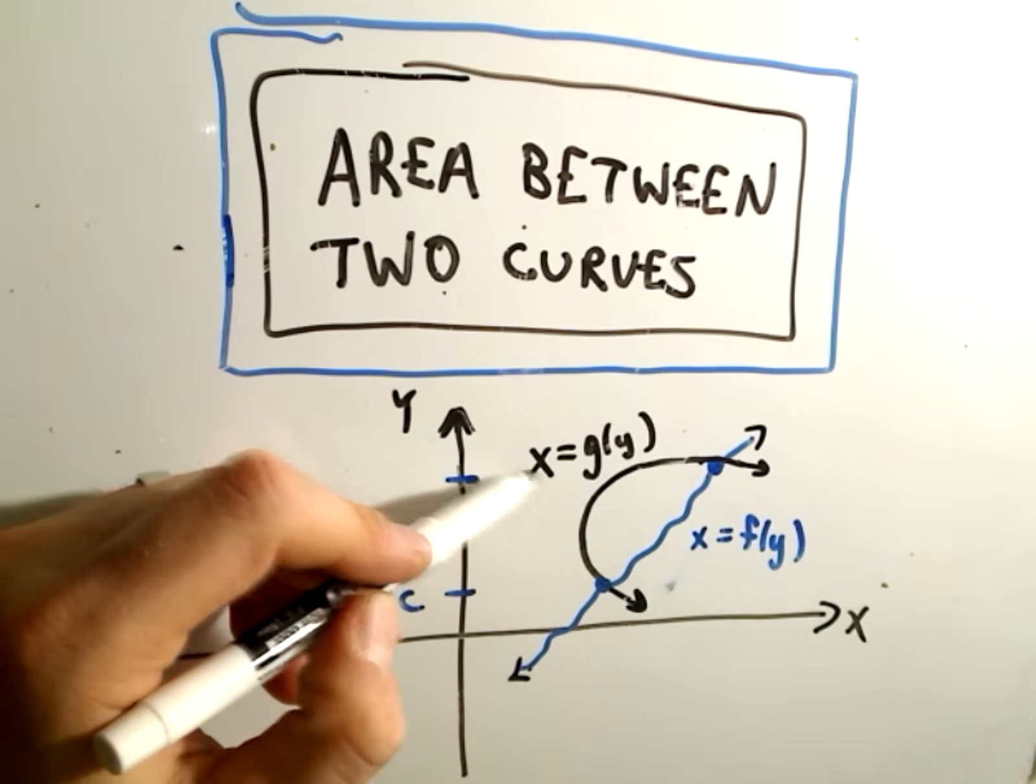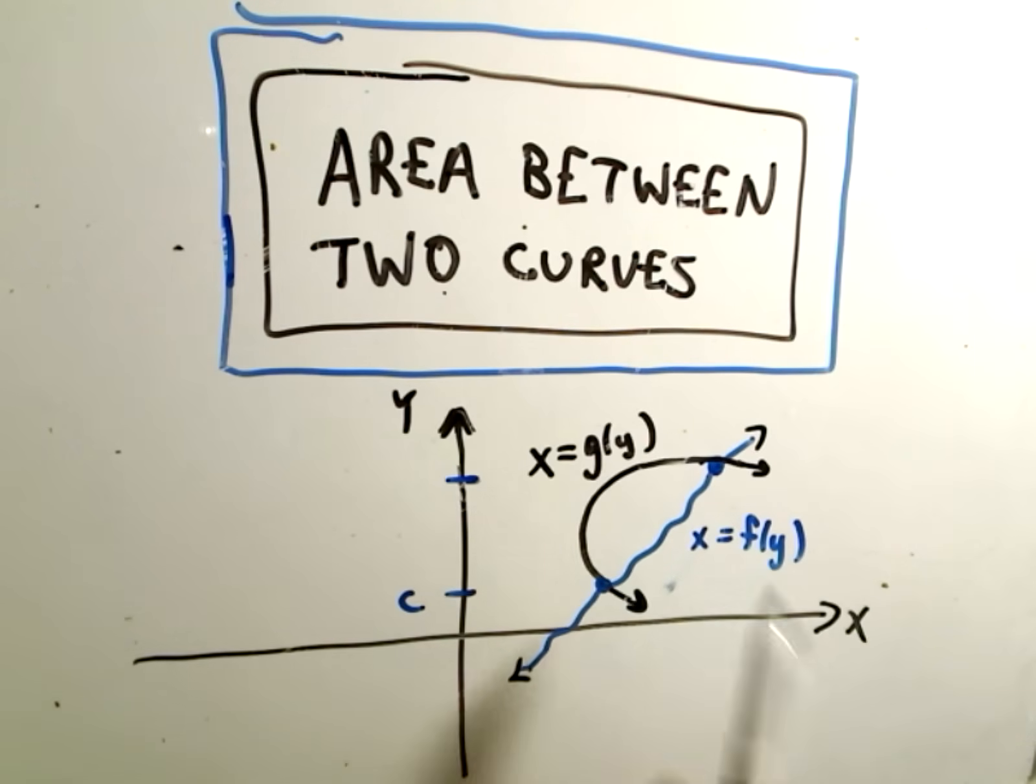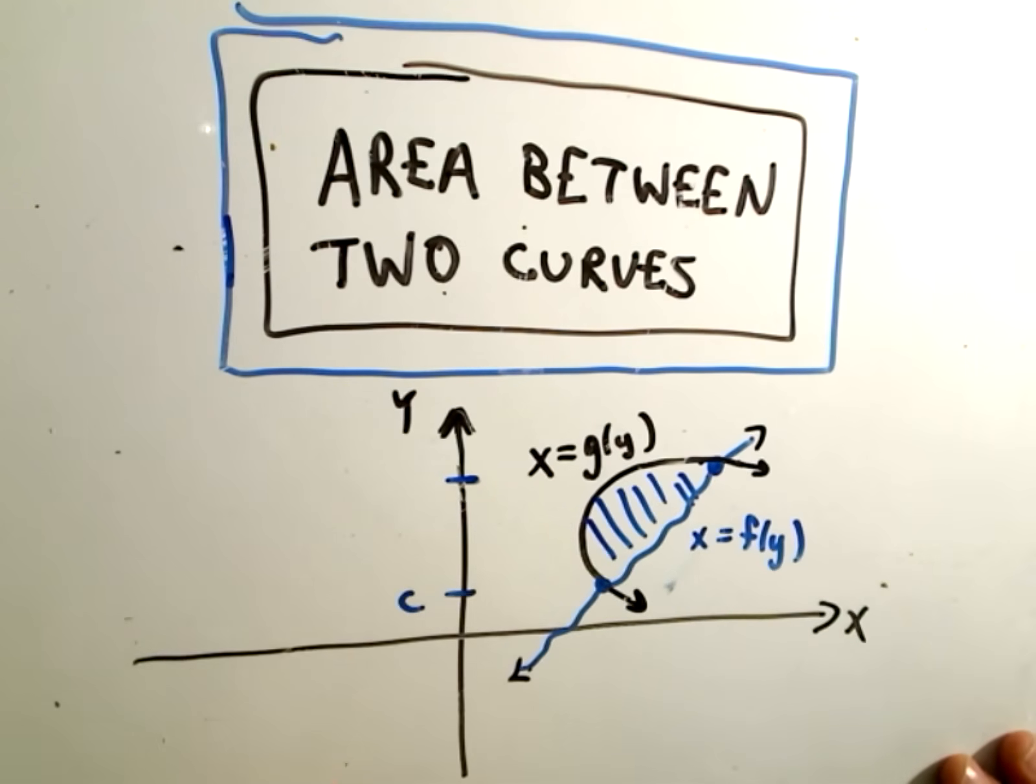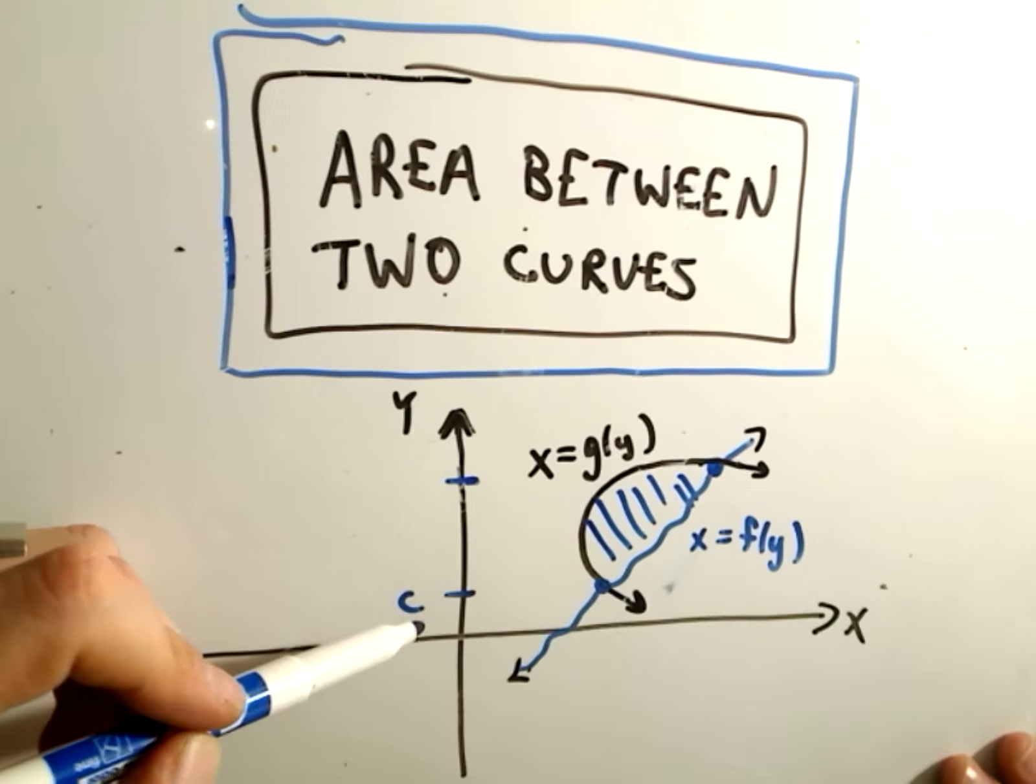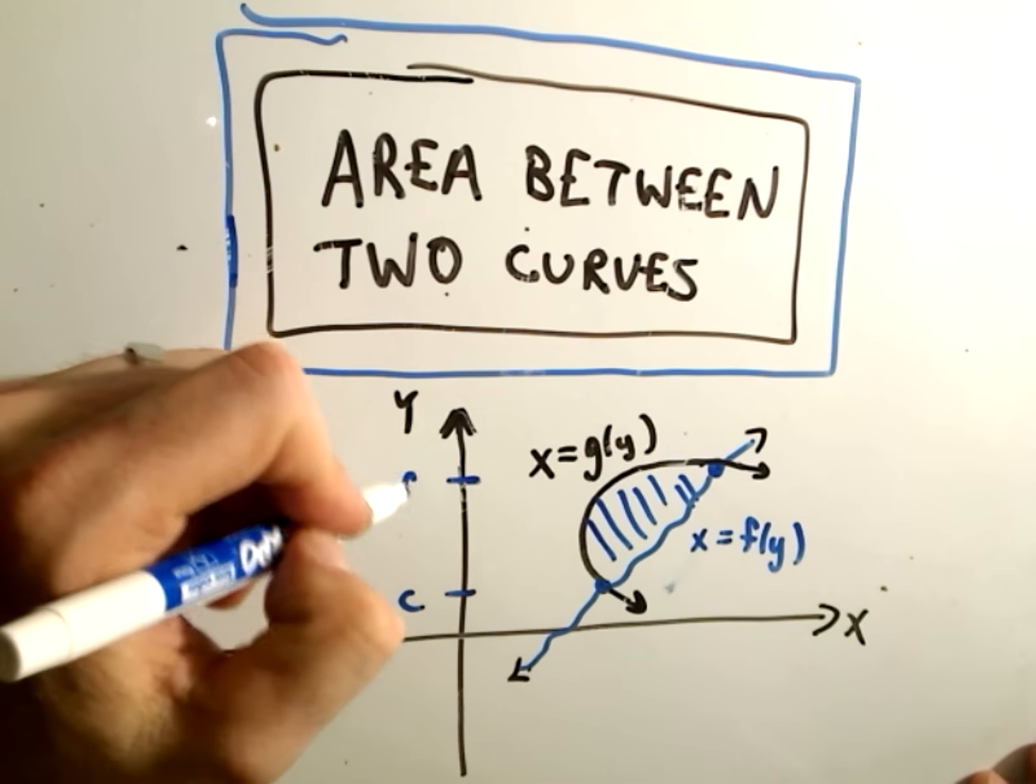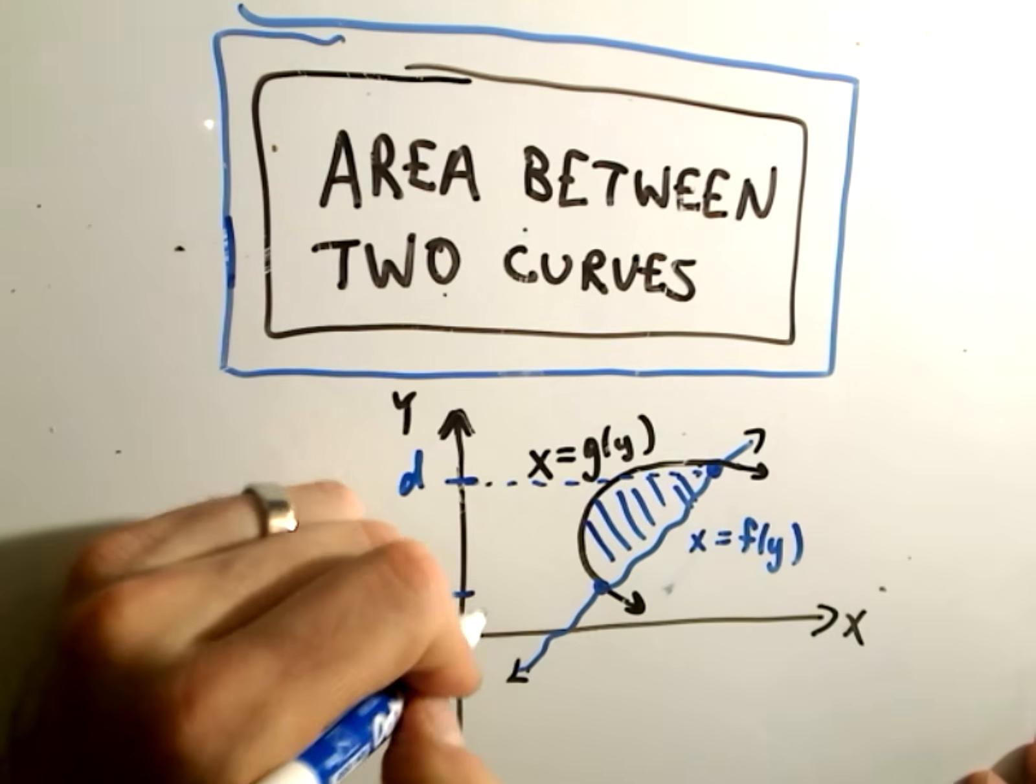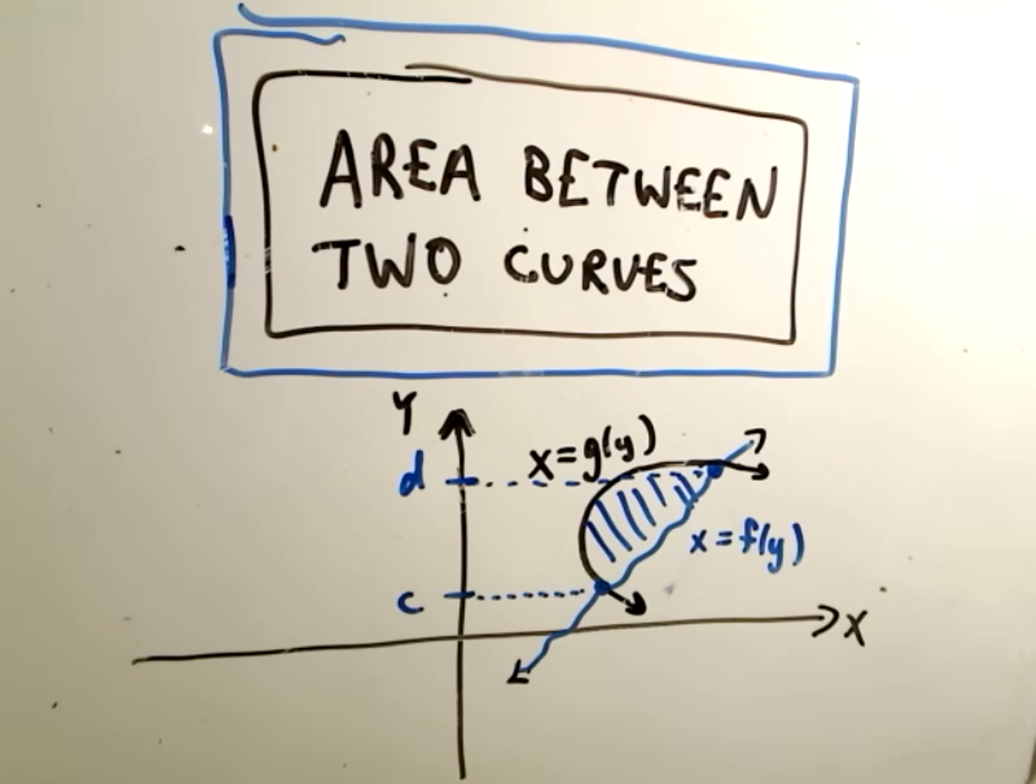So suppose you have a function x equals g of y and x equals f of y, and we want the area trapped in between those two curves. The idea is you find where they intersect, basically you're interested in the y coordinates of their points of intersection.